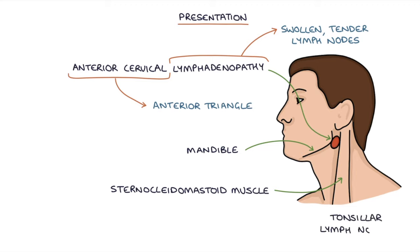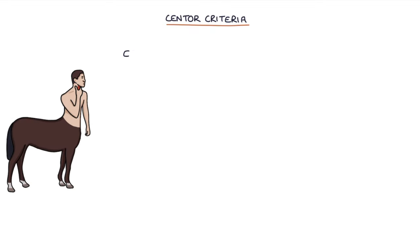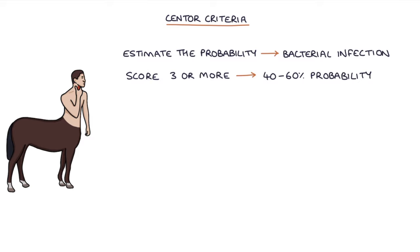The tonsillar lymph nodes are just behind the angle of the mandible or the jawbone. Let's talk about the Centor criteria. The Centor criteria can be used to estimate the probability that tonsillitis is due to a bacterial infection and will benefit from antibiotics. A Centor score of 3 or more gives a 40–60% probability that the tonsillitis is caused by bacteria, and it may be appropriate to offer antibiotics in this situation.